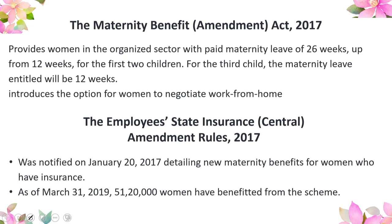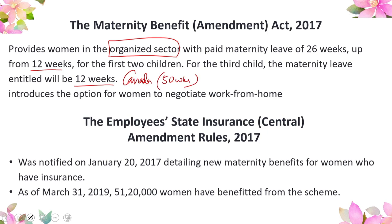The amended law specifically provides women in the organized sector — noting that workers in the informal and unorganized sector are at a disadvantage — with paid maternity leave of 26 weeks, up from 12 weeks, for the first two children. For the third child, the maternity leave entitlement is only 12 weeks. India now has the third most generous maternity leave in the world, following Canada at 50 weeks and Norway at 44 weeks.